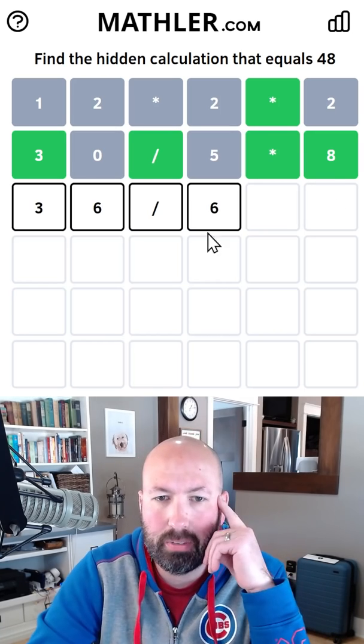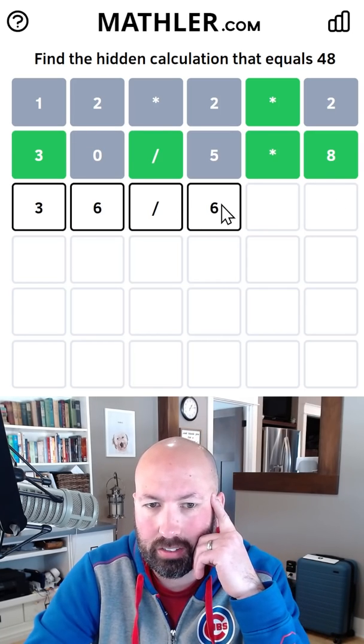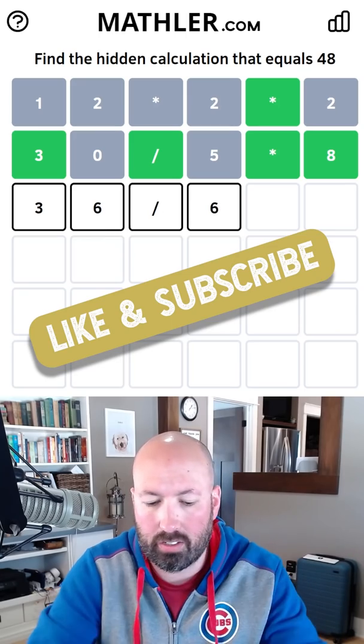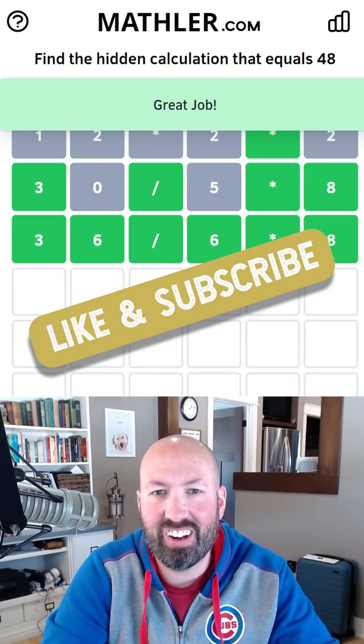Okay, so we're close. So it has to be something that divides to get 6 in the 30s. So it's got to be 36 divided by 6 times 8. There we go. All right, cool.